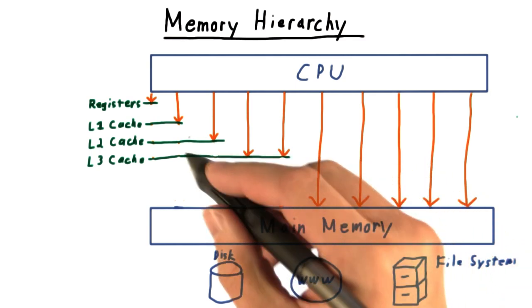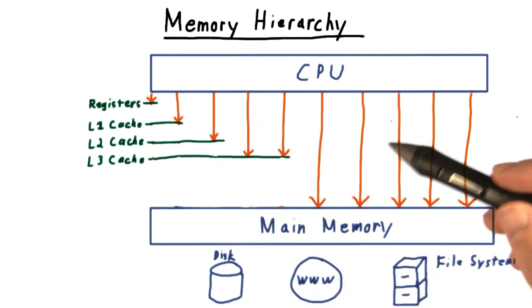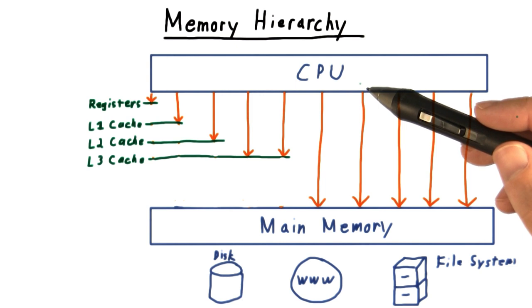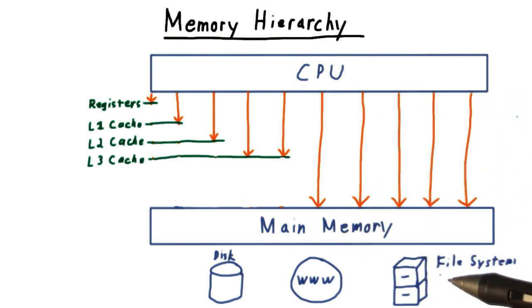And if we do a good job of keeping the data that we are going to access next in the higher levels of the hierarchy, that is, if we can keep our hit rates high, then we can get the speed of the top part of the pyramid, but have the capacity and the overall cost per byte of the lower end of the pyramid.